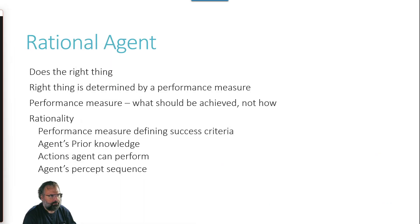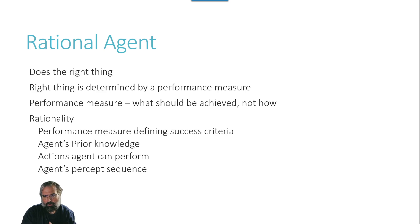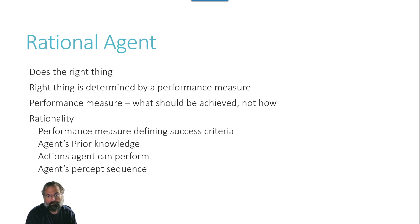When we think about rational agents, rational decisions are about making the right choice of the available choices. What does right mean? It's based upon a performance measure. You're making a decision based upon something that can be measured regarding your attainment of some desired goal. Rationality is all around making sure that the performance measures define your success criteria. You may have prior knowledge — the agent may know something of the world or previous interactions with it, and they know what they can do. There's also a sequence of percepts that are occurring.